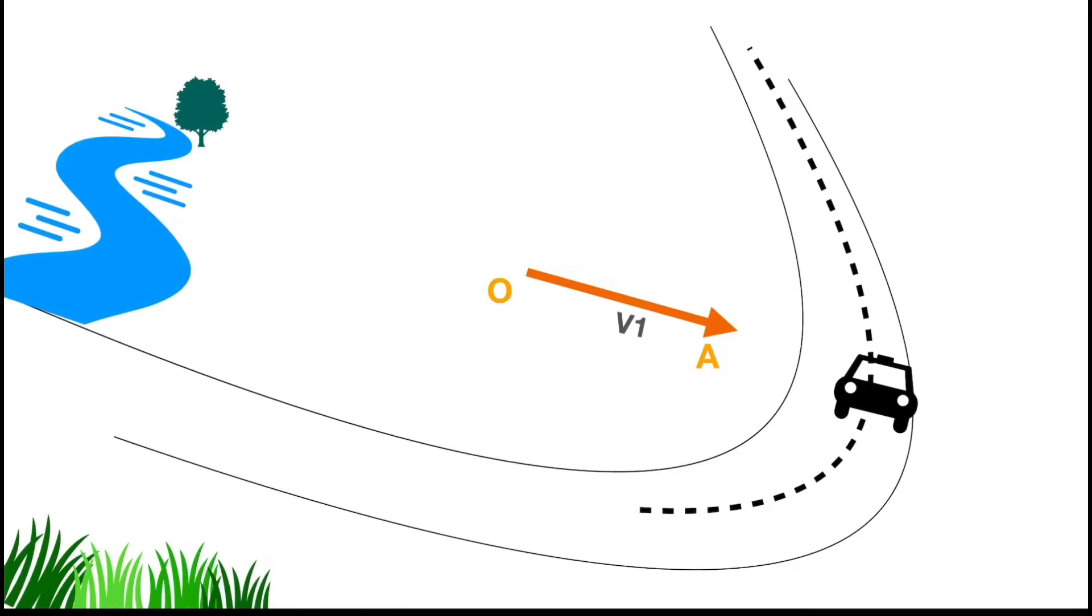So the change in velocity we can find out by these vectors. Here OA is vector V1 and the vector V2 is represented by AB. Now to find out the acceleration, we need to find out the change in velocity. Now change in velocity is V2 minus V1. So we have to find out the minus V1 vector, the opposite vector to V1. So minus V1 vector is BC, which is parallel to OA, but in opposite direction.